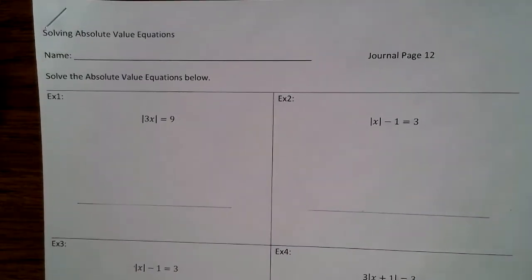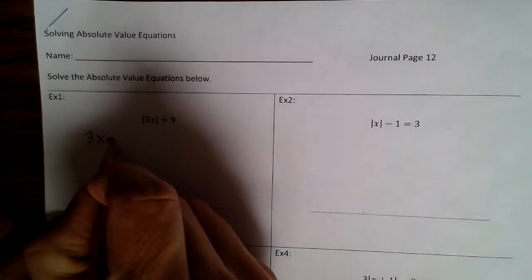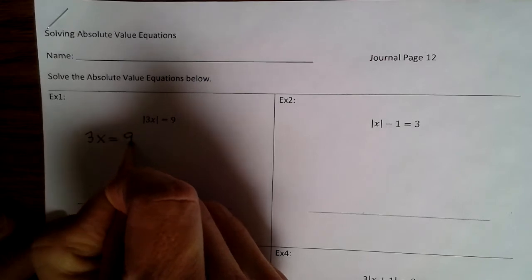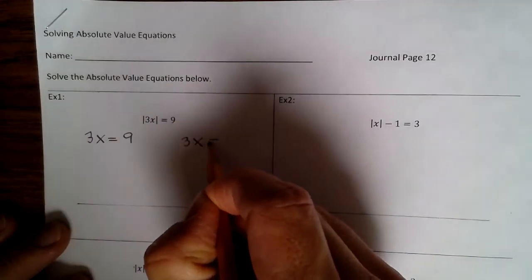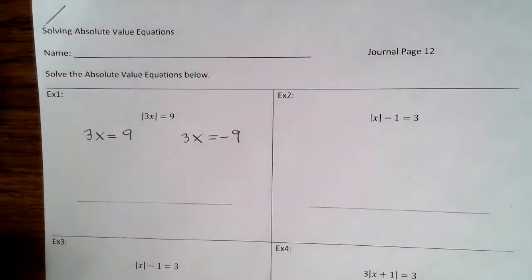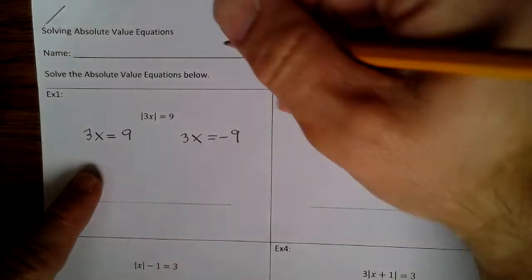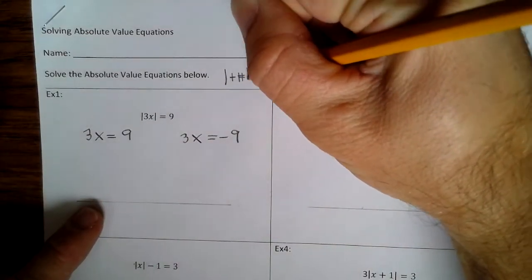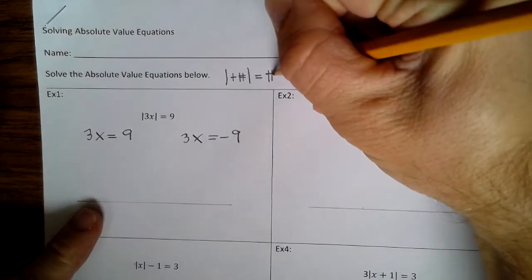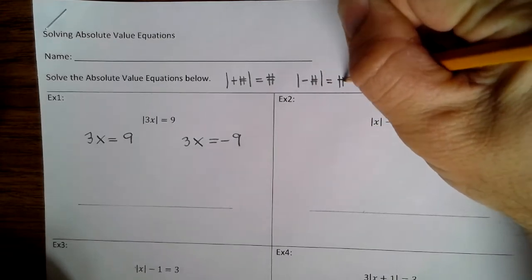All right, example 1: solve the absolute value equation below. Step 1, apply the definition. We can say that 3x is equal to 9, and 3x is equal to negative 9. The reason being, the absolute value of a positive number is that number, and the absolute value of a negative number is that number.